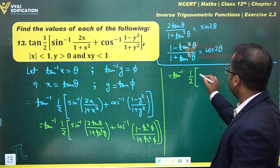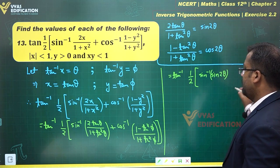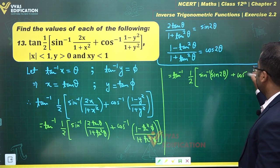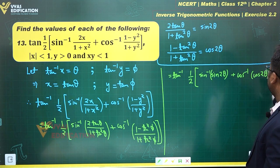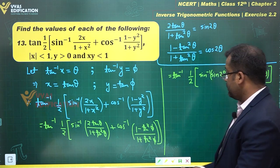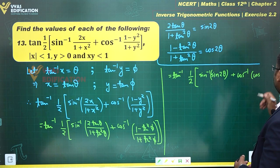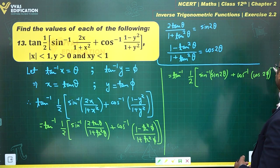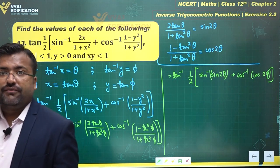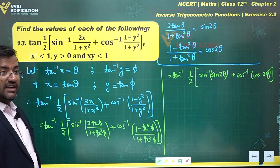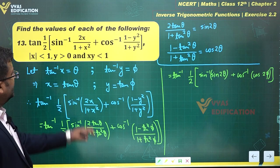The next step is to apply our formulas. Sin inverse (2tanθ/(1+tan²θ)) simplifies to sin inverse sin2θ, and cos inverse ((1-tan²φ)/(1+tan²φ)) simplifies to cos inverse cos2φ. So we have tan inverse of (1/2)[sin inverse sin2θ + cos inverse cos2φ].